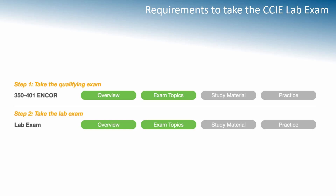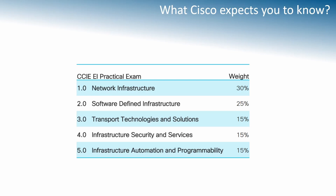First, let's look at the requirements to take the CCIE lab exam. You have to pass the written exam — that's the anchor exam. Cisco updated the CCIE routing and switching track to become the enterprise track, so now you have to pass both the written and core exam before you're eligible to take the lab exam.